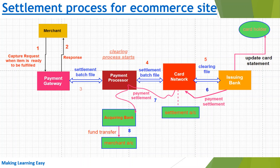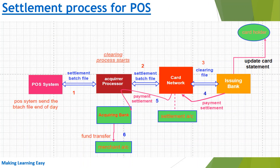Settlement is sometimes also known as clearing and settlement, because an internal process called clearing also runs. In the clearing process, all calculations happen — such as how much amount the issuing bank needs to transfer to the card network, how much to deduct as transaction fees, and how much the card network needs to deduct. Once all the clearing is done, the card network sends the clearing file to the issuing bank for the transfer of the settlement amount. This is how the settlement process works.